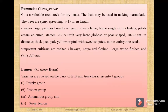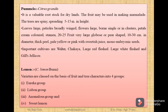The next main group is Pomelo (Citrus grandis). Pomelo is a valuable rootstock for dry lands. The fruit may also be used in making marmalade. The trees are spiny and spreading, 5 to 15 meters in height, with large leaves and broad petioles. Important cultivars of Pomelo are Waller, Chakaya, Large Red Fleshed, Large White Fleshed, and Gill's Epitome.